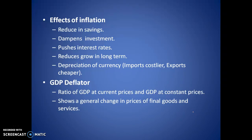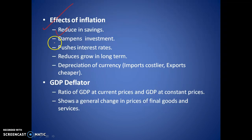Demand-pull inflation occurs when demand increases while supply remains the same. It increases due to the rise in purchasing power of people, which increases due to higher salaries — for example, when the Seventh Pay Commission was implemented. Effects of inflation include a reduction in savings of people, and it dampens investment because if prices are high, people prefer to hold cash in bank accounts.